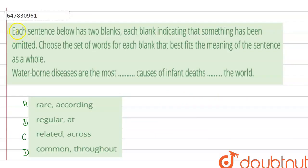Hello students, here we have a question where each sentence below has two blanks. Each blank indicates that something has been omitted. Choose the set of words for each blank that fits the meaning of the sentence as a whole. The sentence is: Waterborne diseases are the most, first fill in the blank, causes of infant death, second fill in the blank, the world.